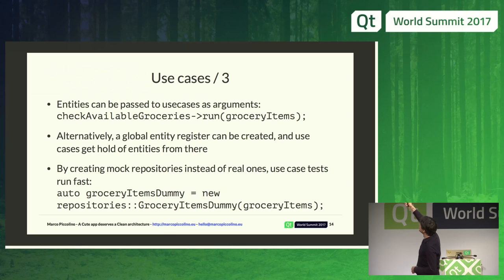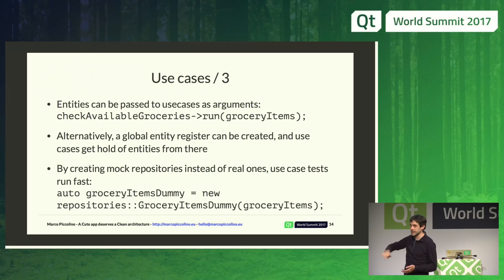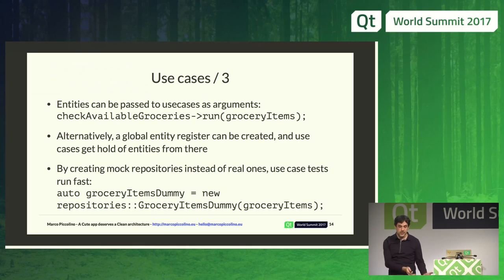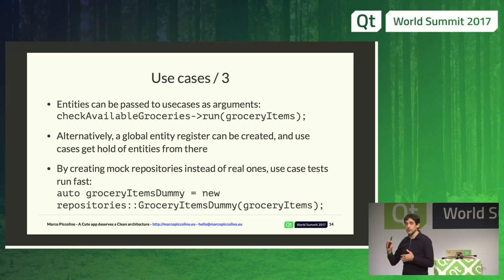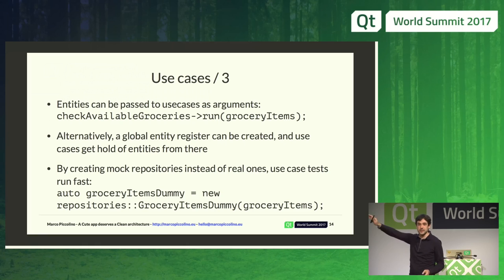There are technicalities: you can pass the entity to the use case as a reference or pointer, or use a global registry where all entities are registered at startup. For fetching data, you can have real fetchers from a database, or use mock repositories where you mock the data brought into your application. Using that strategy, you can run tests very fast without accessing the database or internet, which is always a mess when developing.